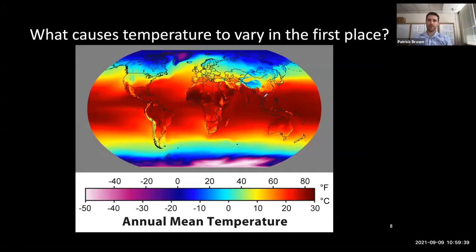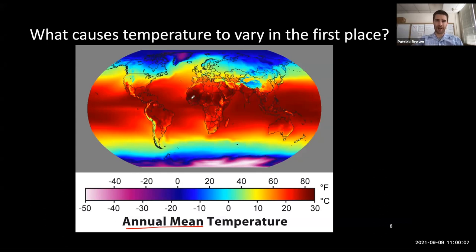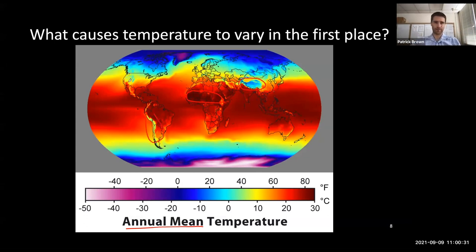To be more general, we can think about why temperature on Earth varies in space. This is a map of annual mean temperature — just averaged over all seasons at each location. The equator is warmer than the high latitudes. The hottest places tend to be over land rather than ocean. Temperature also varies with elevation — the Tibetan Plateau is relatively close to the equator but very cold, and mountain ranges like the Andes and the Rockies are colder than adjacent places at the same latitude.